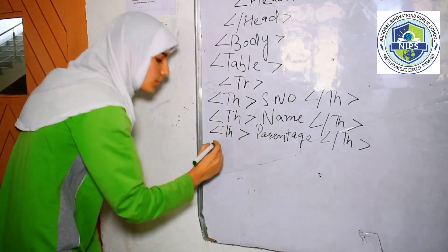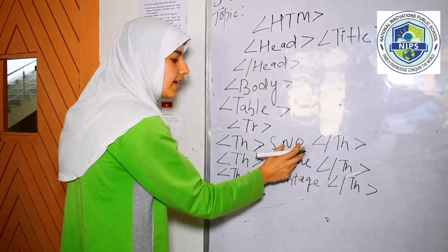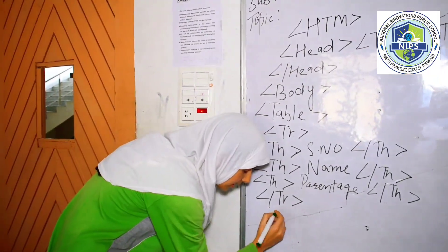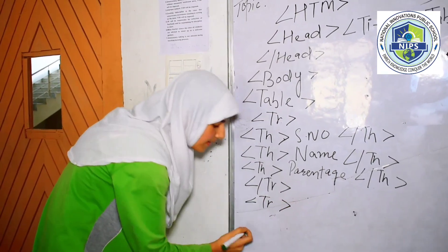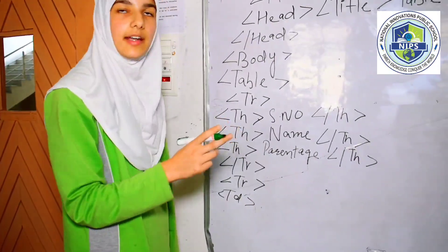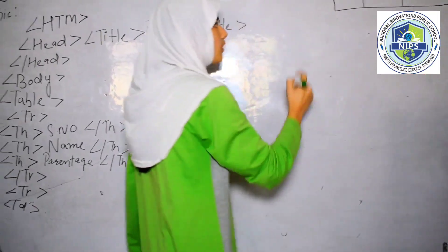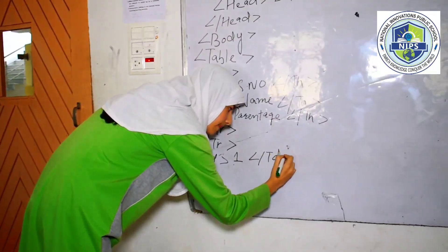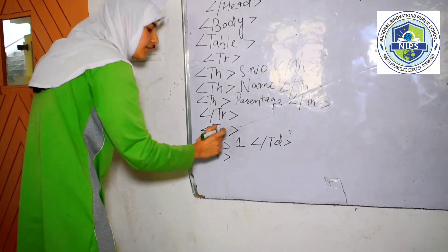Then we will give data. When we give table data, we will use 'td', which means table data. So if we give serial number here, we will give data — for example, '1'. Then we will close the td. Then we will give name, for example 'Paqiza'.